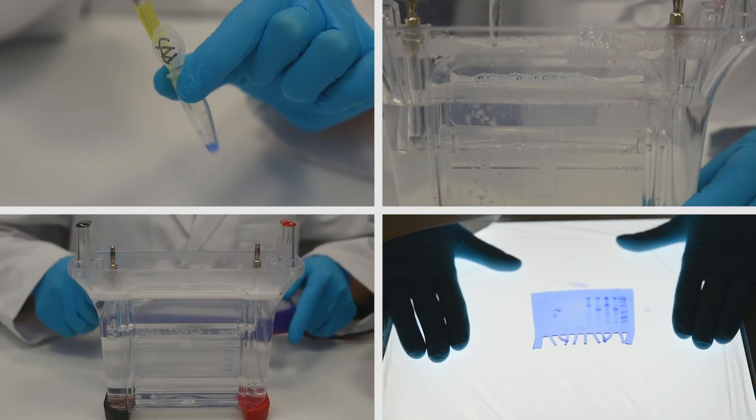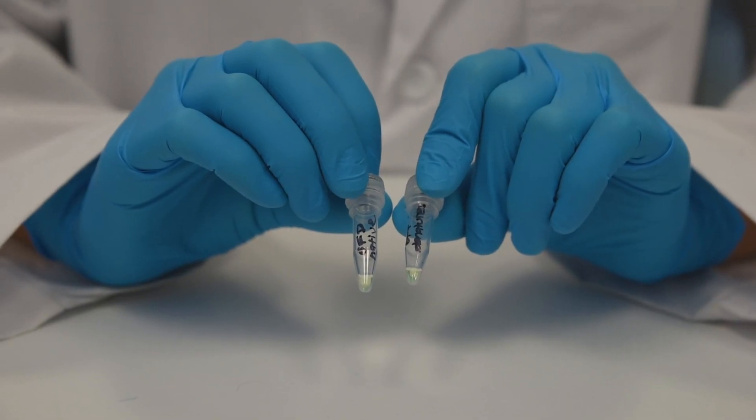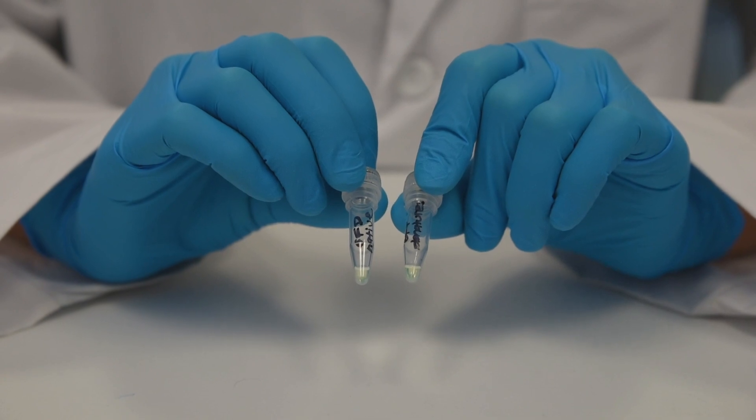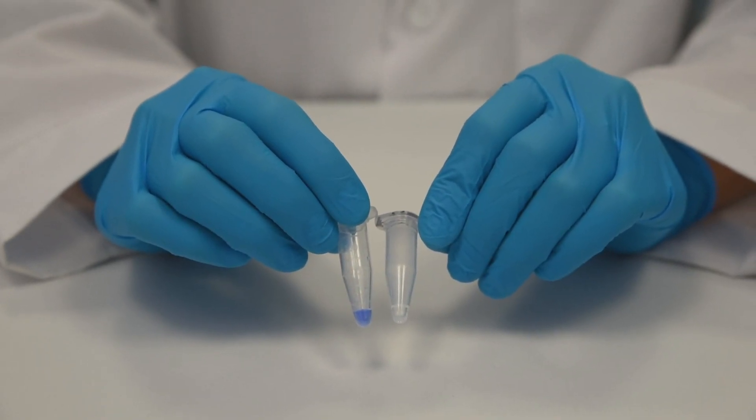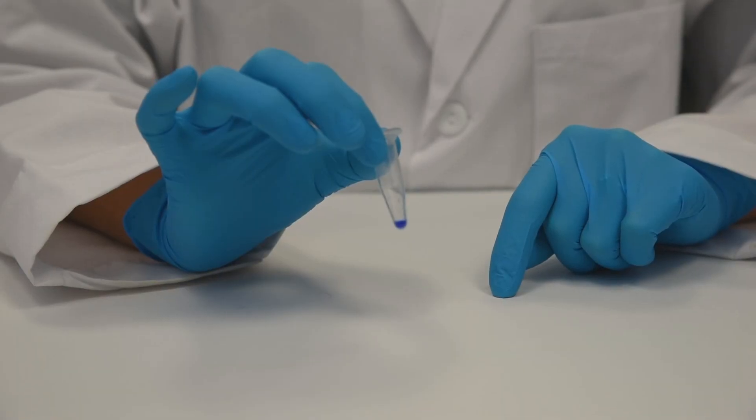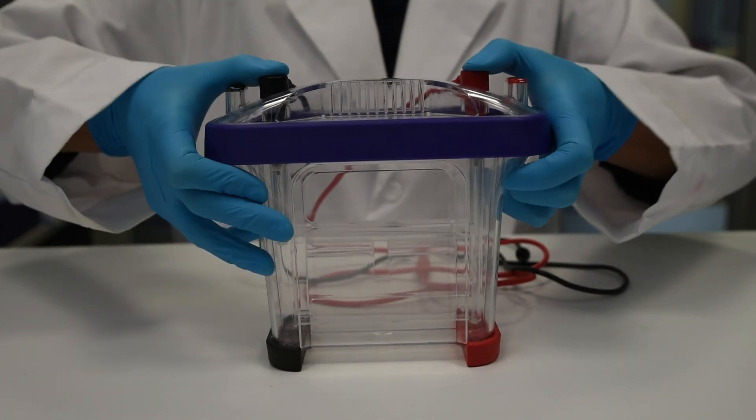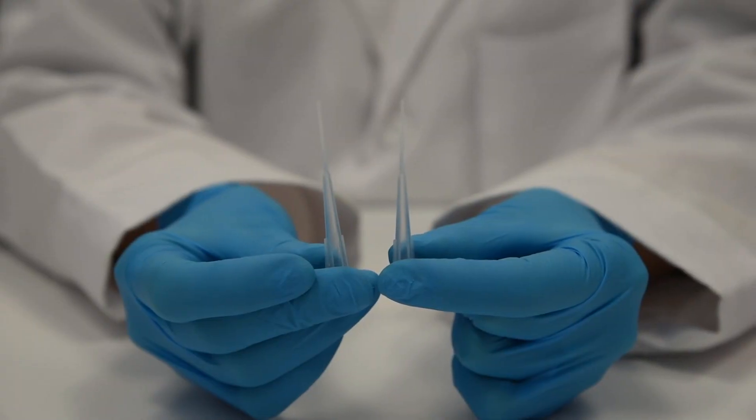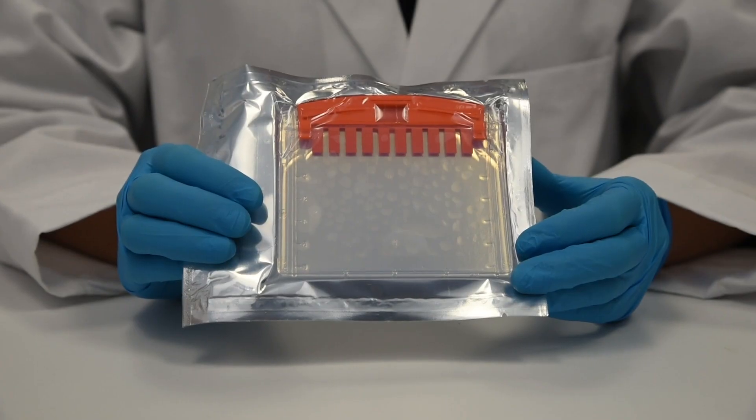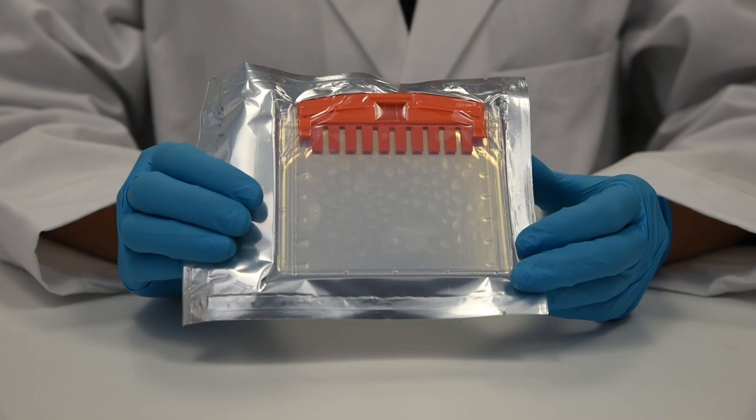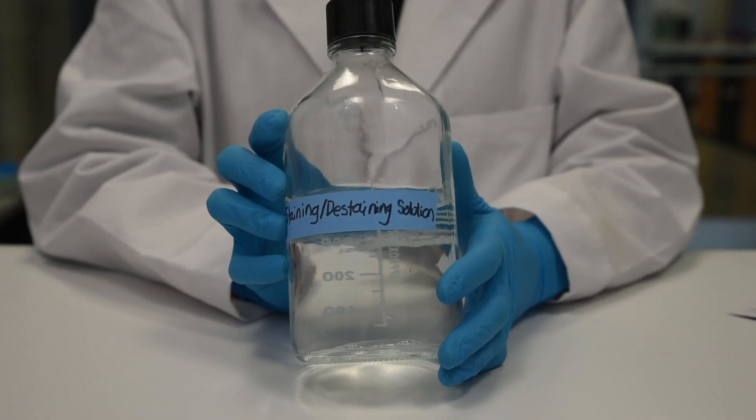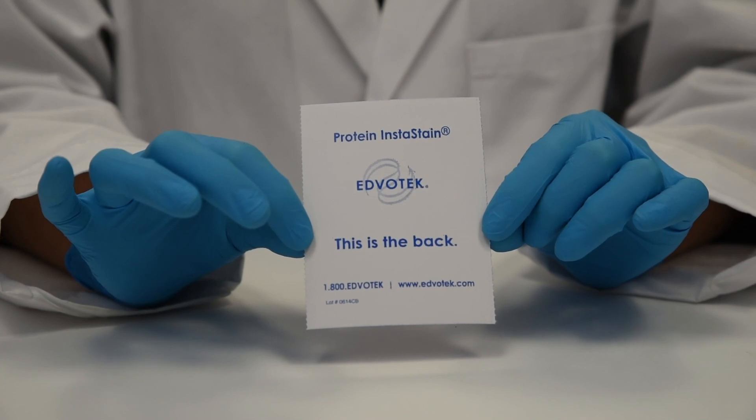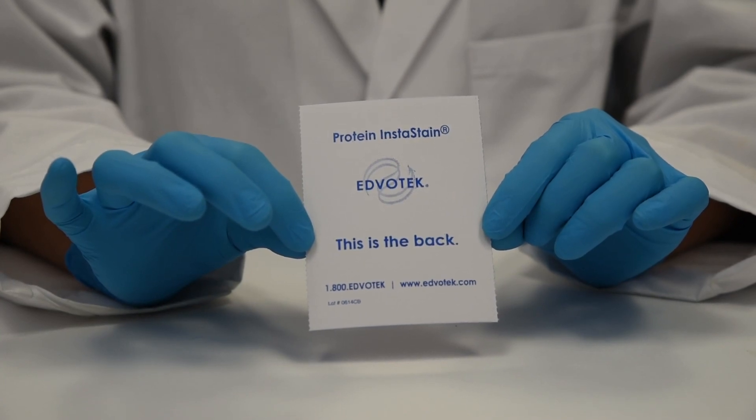For this module, you will need tubes containing purified GFP from Module 3, tubes of 50% glycerol and protein denaturing solution, rehydrated standard protein marker, a vertical electrophoresis apparatus and power supply, a micropipette and tips, an SDS PAGE gel to be shared between groups, diluted electrophoresis buffer, protein staining and de-staining solution, and finally, a protein instastain card.